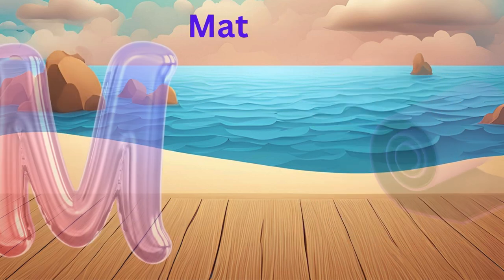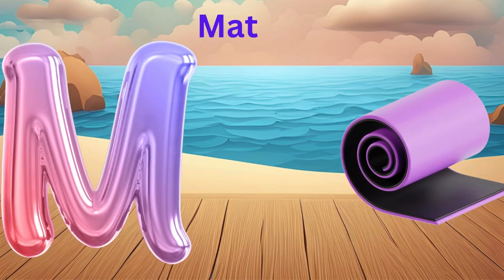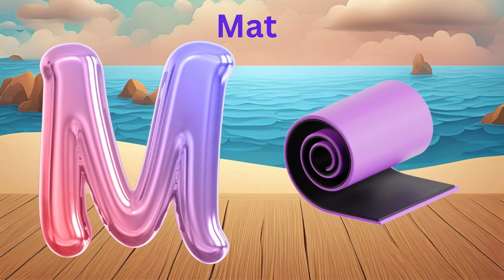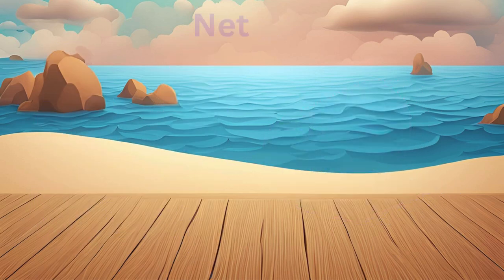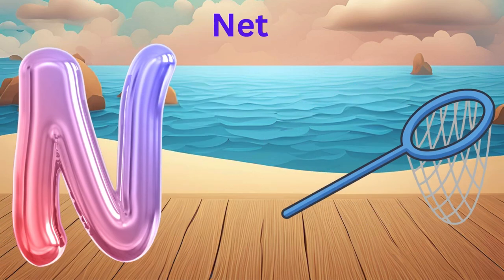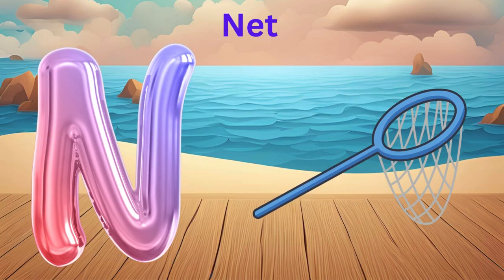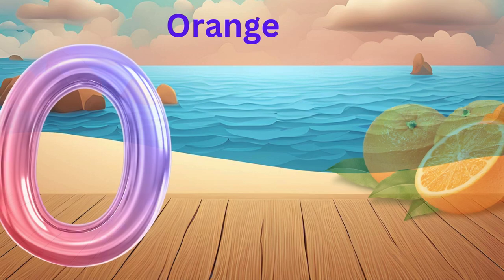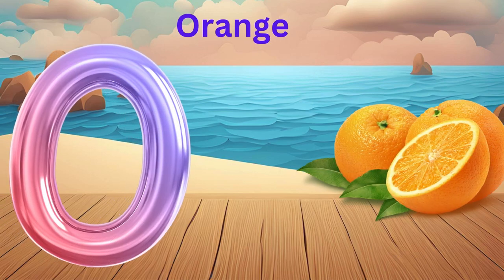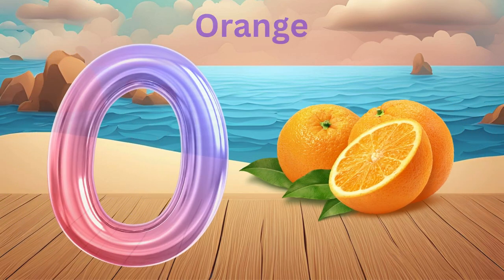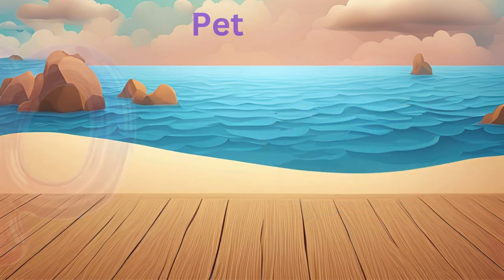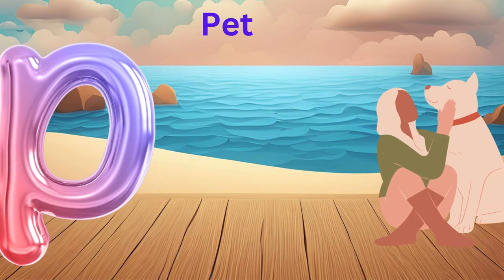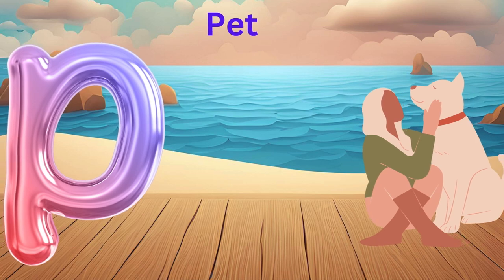M is for Monkey, M-M-Monkey. N is for Net, N-N-Net. O is for Octopus, O-O-Octopus. P is for Parrot, P-P-Parrot.